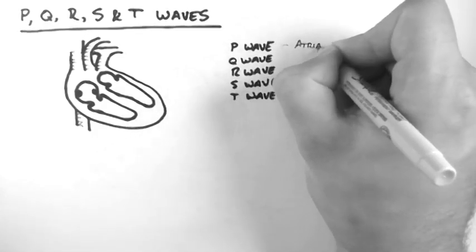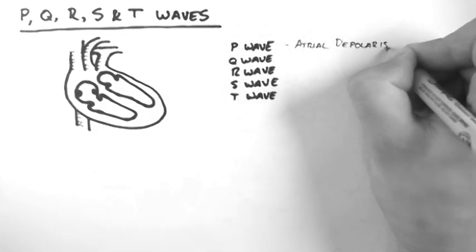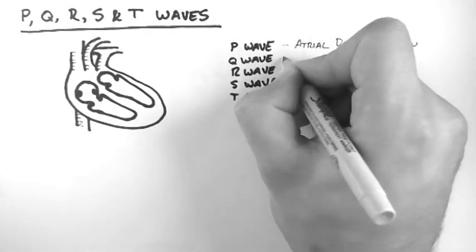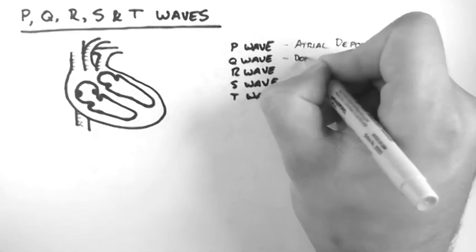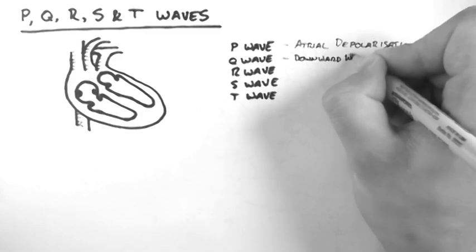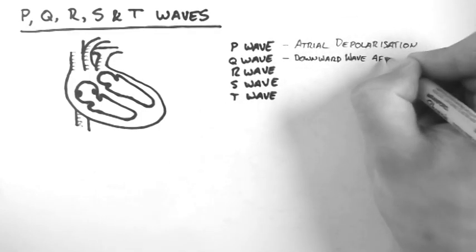The P wave occurs during atrial depolarisation. The Q wave is a downward wave which follows a P wave.